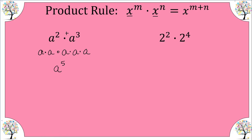Now let's do two squared times two to the fourth. We could evaluate each and then put it all together, but let's simplify first. Two squared is two times two, and then we're going to multiply four more factors of two. Remember repeated multiplication — so altogether we have six factors of two.